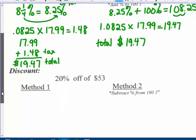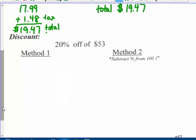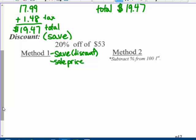The same thing can be done when you get a discount or savings. Method one: I'm going to find the discount and the sale price. Method two: I'm only going to find the sale price, not how much I'm saving.